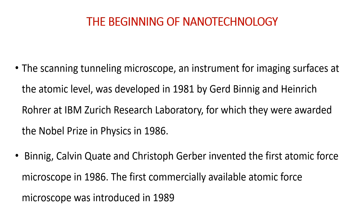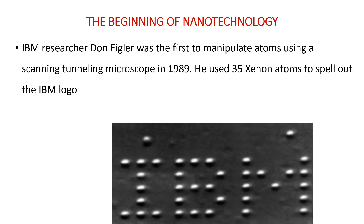The atomic force microscope is one of the advanced measurement tools of the nano-era, remarkably helpful in the deliberate fabrication and manipulation of structures at the atomic or molecular level. IBM researcher Don Eigler was the first to manipulate atoms using a scanning tunneling microscope in 1989, using 35 xenon atoms to spell out the IBM logo.